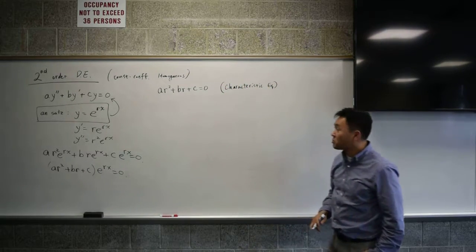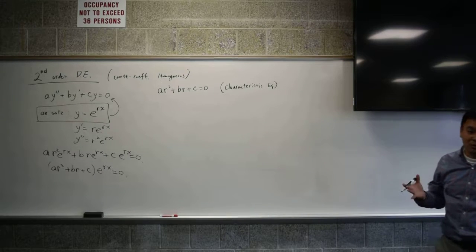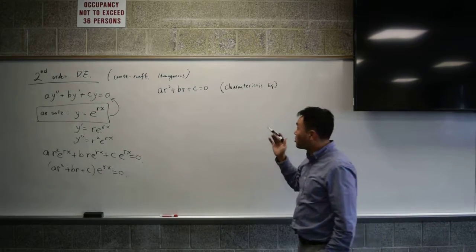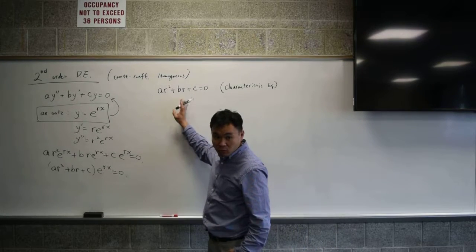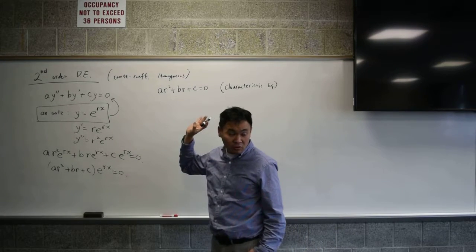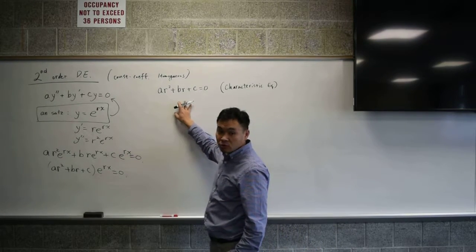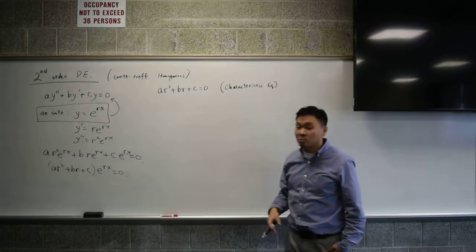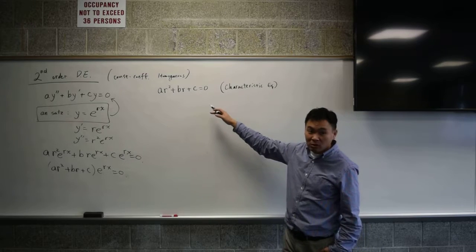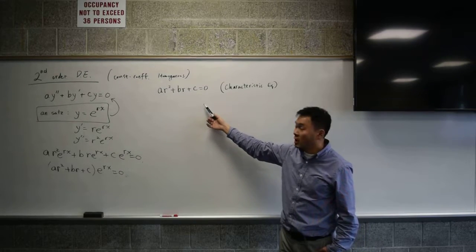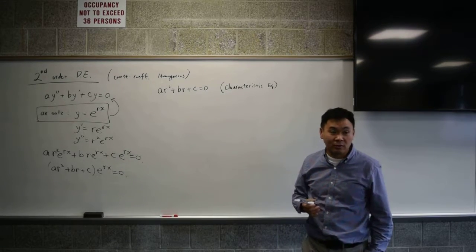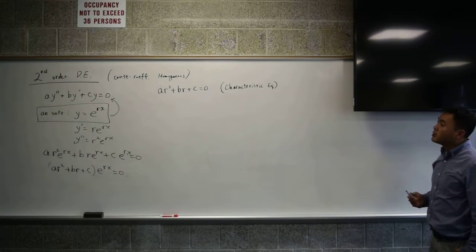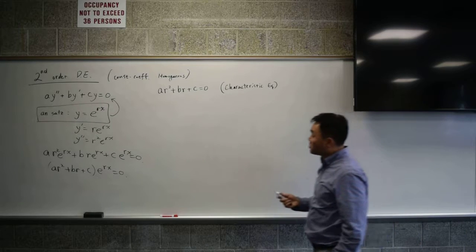The name 'characteristic equation' comes from the fact that whether it has two distinct real solutions, a single solution with multiplicity two, or two complex solutions — depending on that, the behavior and shape of the solution looks completely different.